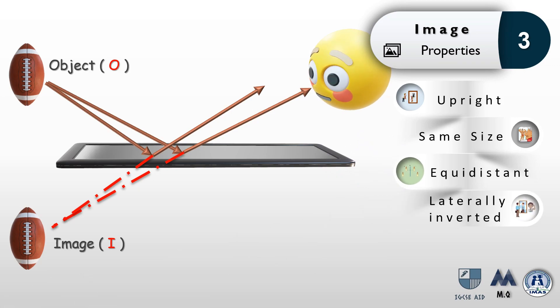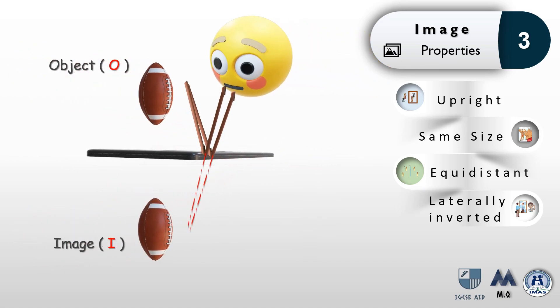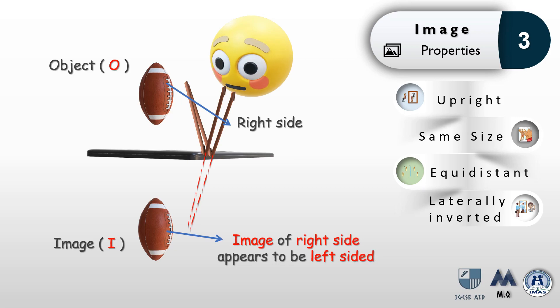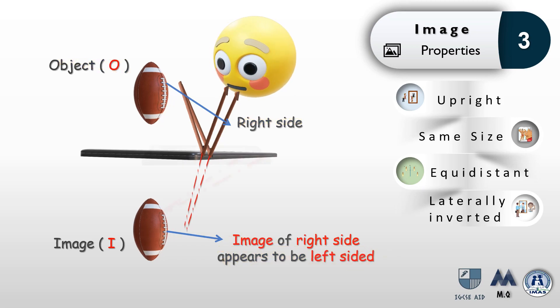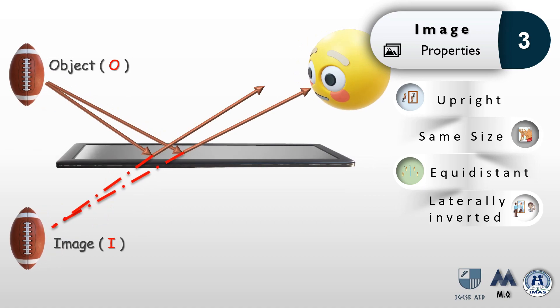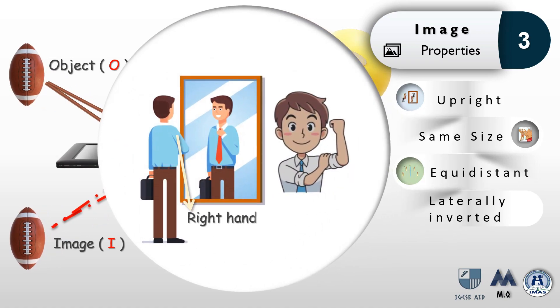Another property of an image is that it is laterally inverted. This could be a bit tricky, so pay attention. Notice that the right side of the object has an image that appears to be left-sided. That's what we mean by lateral inversion. To get this more clearly, look at the following picture.